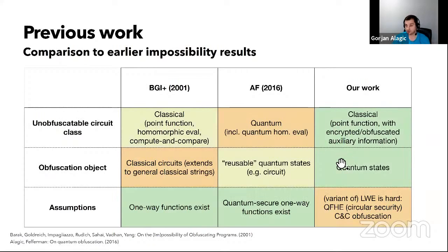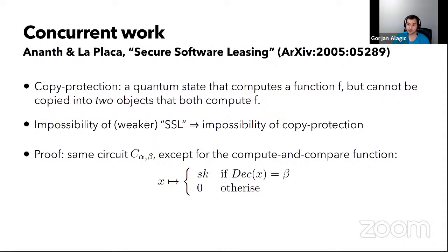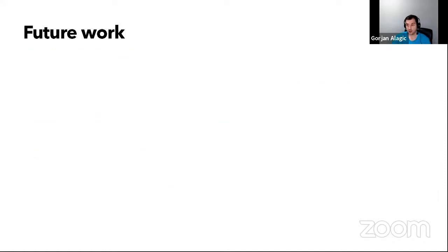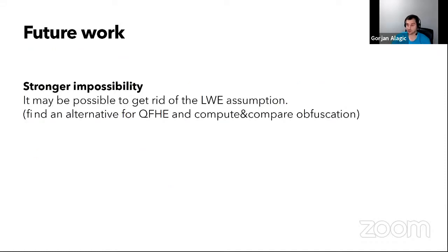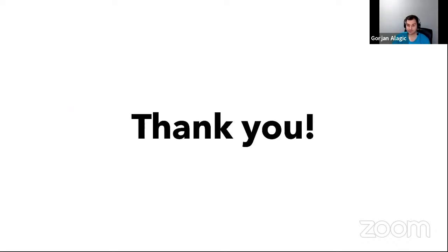Comparing to previous results, we achieved more in terms of impossibility. However, we also needed to tack on some additional assumptions, and it would be nice to see if we can relax those. Two things worth looking at in future work: one is relaxing some of these assumptions, and the other is looking at possibility — specifically indistinguishability obfuscation, which is a weaker form but is perhaps possible. Thank you.